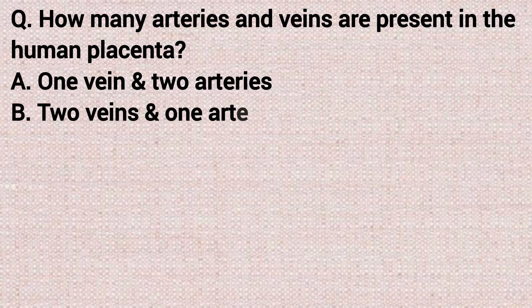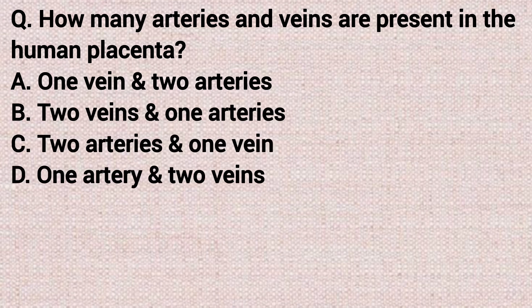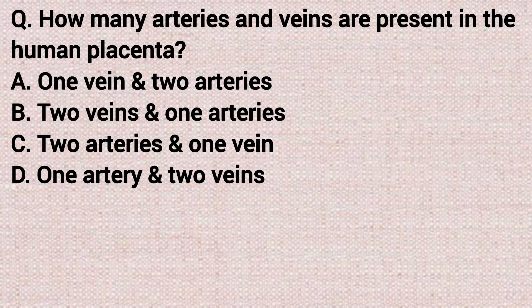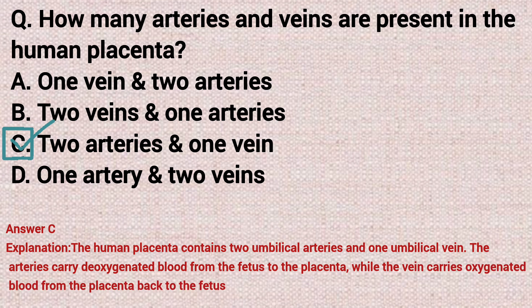The next question: how many arteries and veins are present in the human placenta? Option A: one vein and two arteries. Option B: two veins and one artery. Option C: two arteries and one vein. Option D: one artery and two veins. The correct answer is option C, two arteries and one vein.